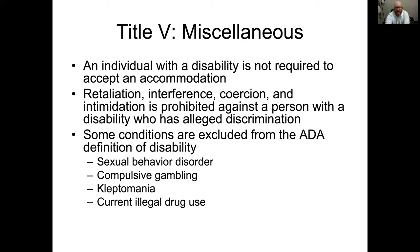There are some conditions excluded from the ADA definition of a disability. Take note of these: sexual behavior disorder, compulsive gambling, kleptomania, and current illegal drug use. The common theme among these exclusions is that they are viewed to a degree as choices, and some are also illegal — kleptomania, illegal drug use, and depending on the type, sexual behavior disorder. With compulsive gambling, you're hurting yourself but making that choice. Remember those four exclusions.